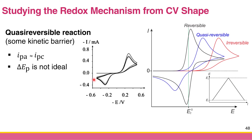Comparing the reversible and quasi-reversible reactions side by side, you can see that both have approximately equal anodic and cathodic peak currents. However, the ΔEp of the quasi-reversible reaction is much larger compared to the reversible reaction. That is the key difference between reversible and quasi-reversible.